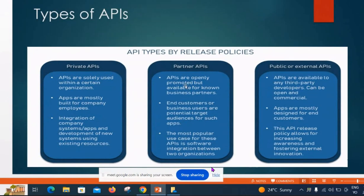What are the types of API? There are three types of API: private API, partner API, and public API. Private APIs are used within a certain organization. Partner APIs are commonly promoted but available only for known business partners. Public APIs are available to any third-party developer and can be open commercially. For example, a private API can be like an organization where only that organization's employees are using it.